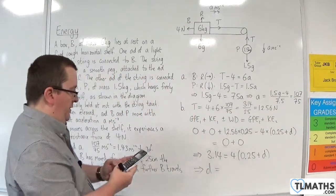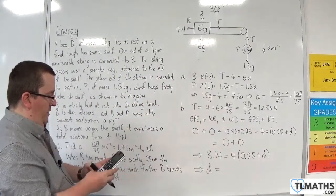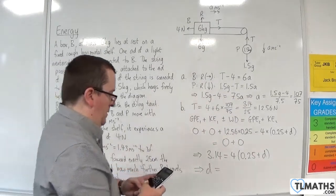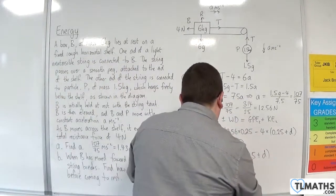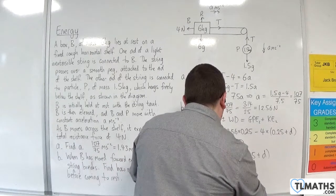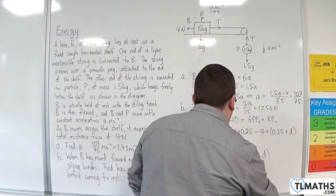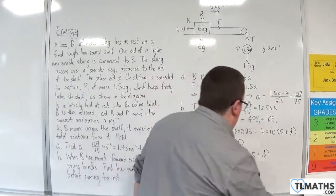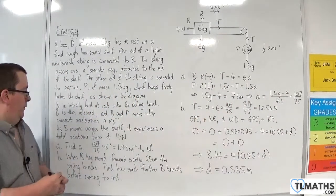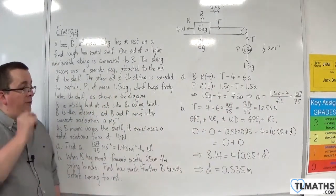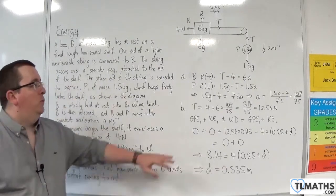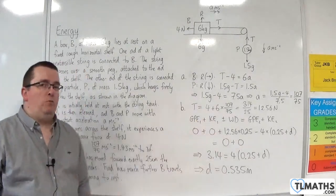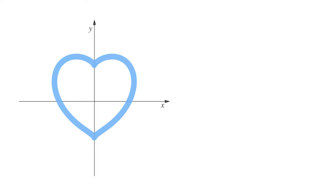So, 3.14 divided by 4, take away the 0.25, and we get 0.535 metres. And so, that is how much further B travels before coming to rest, and here, for part B, we're using the work energy principle.